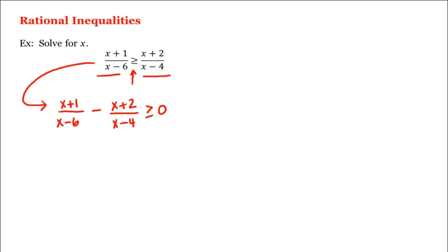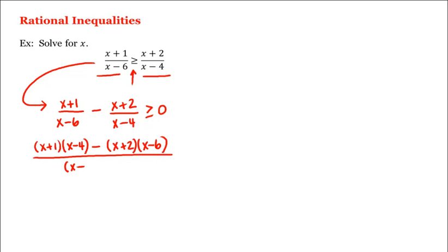And now we'll find a common denominator on the left hand side and simplify. The common denominator is the product, so what we get is x plus 1 times x minus 4, minus x plus 2 times x minus 6, all divided by x minus 6 times x minus 4.